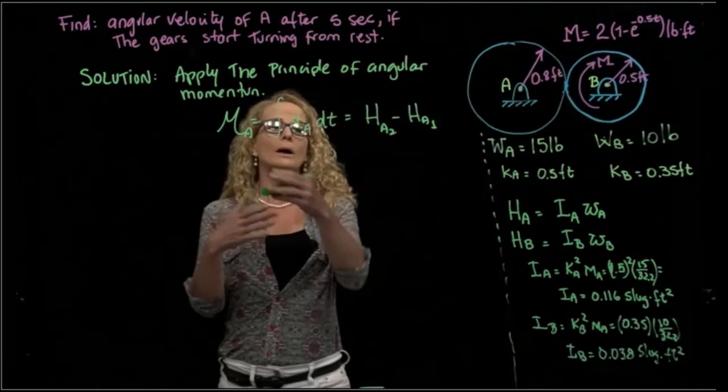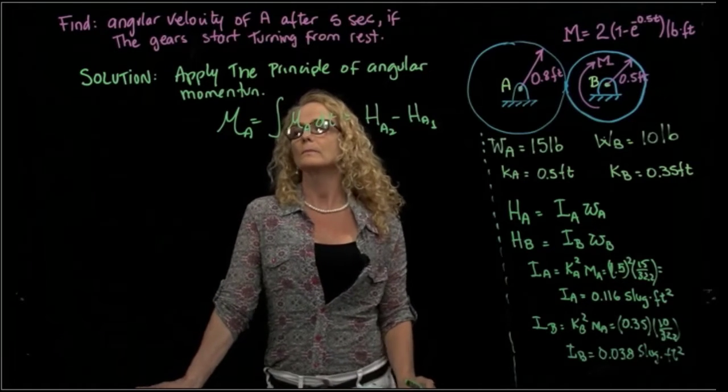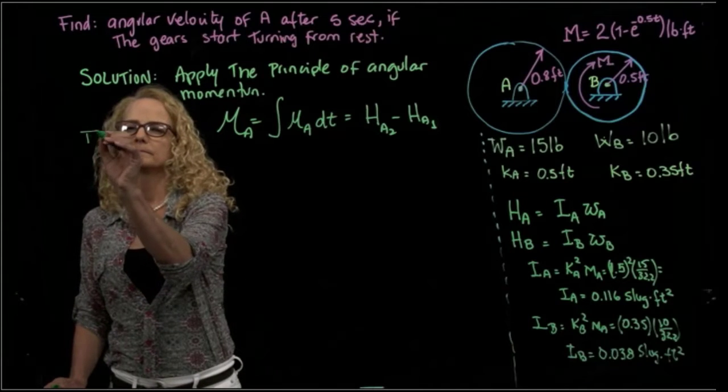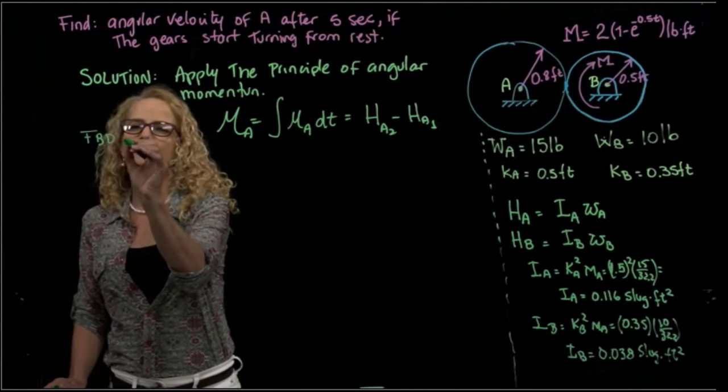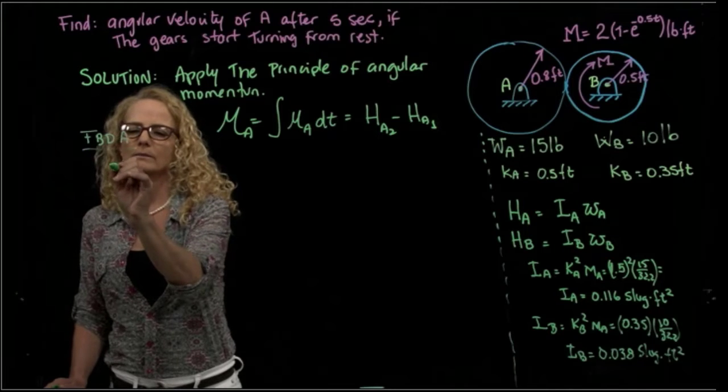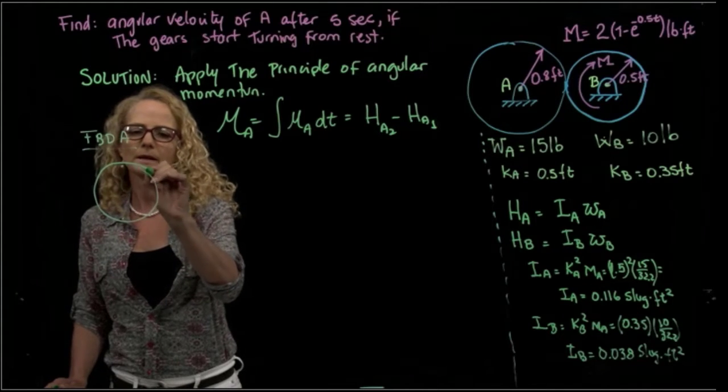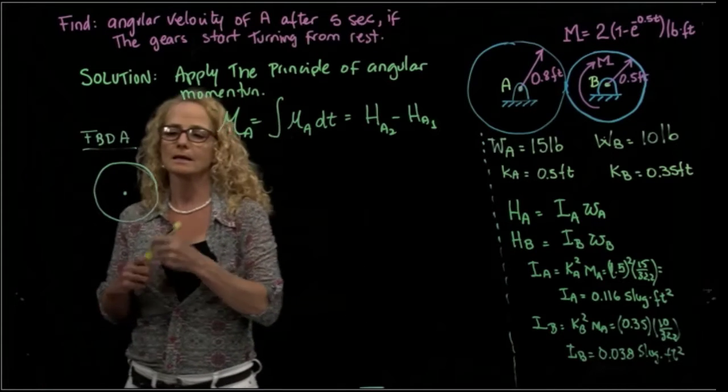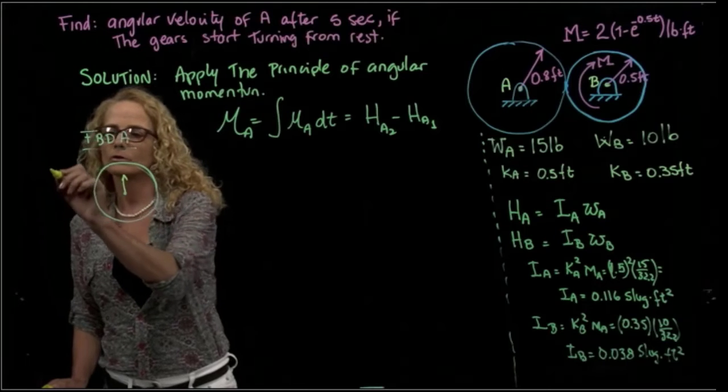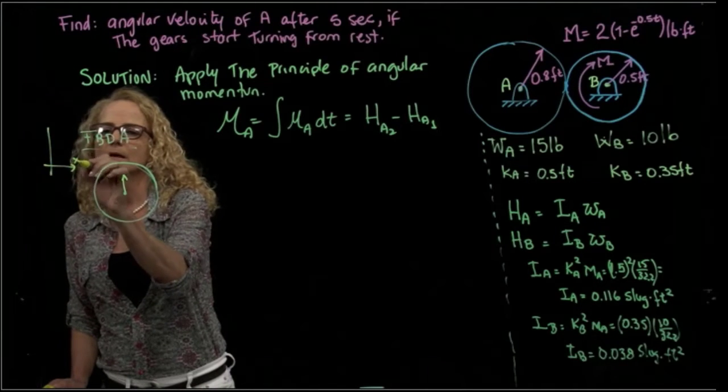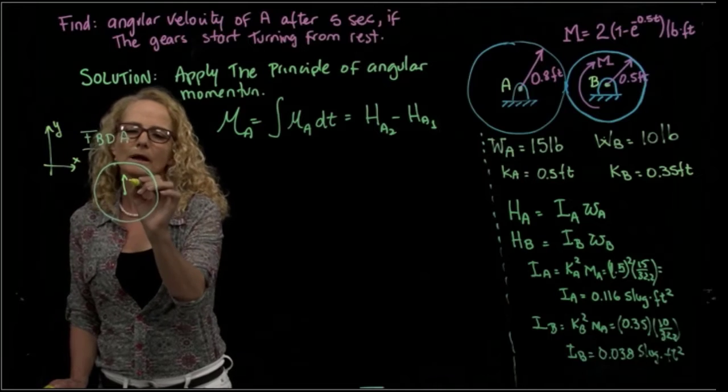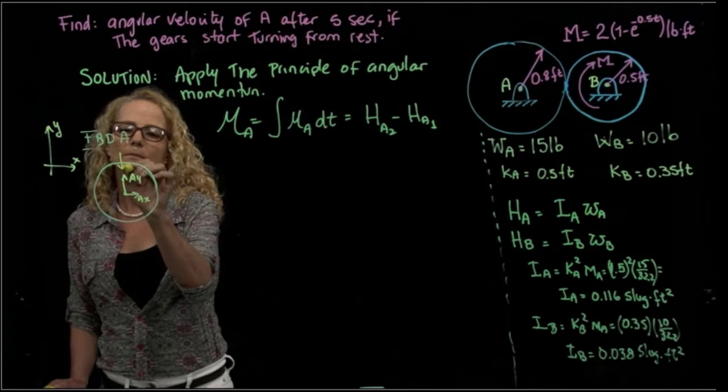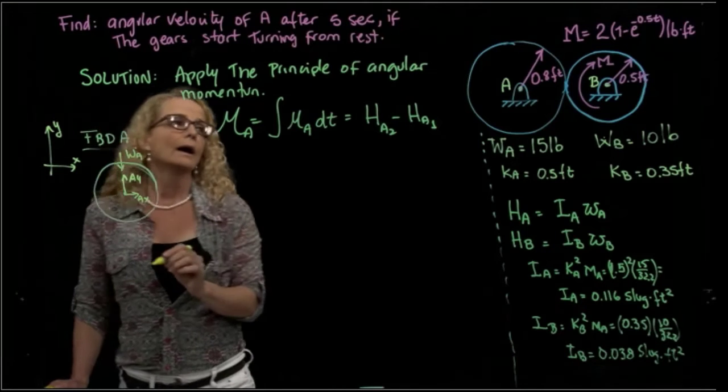Okay, so to apply the principle of angular momentum, I will do the free body diagram of my gears of A. I will draw it a little bit smaller so that I have space. So here, what forces do I have? I have two forces in A. So using my coordinate system X and Y, I will have Ay and Ax. I have the weight of A. And what else do I have?